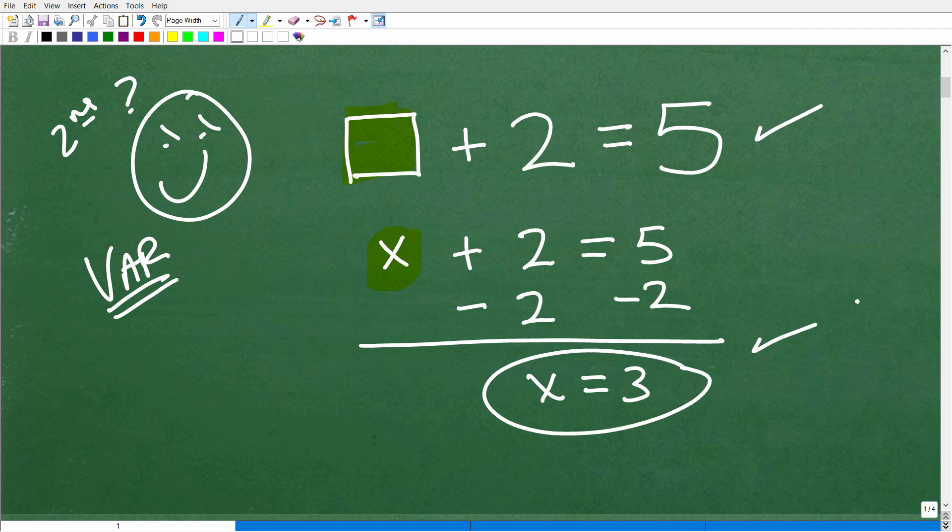Which is effectively doing this problem, but here I'm solving an algebraic equation to figure out, oh, that 3 is, in fact, the right answer. So again, this is an example of you learning mathematics using a variable that is not a letter.